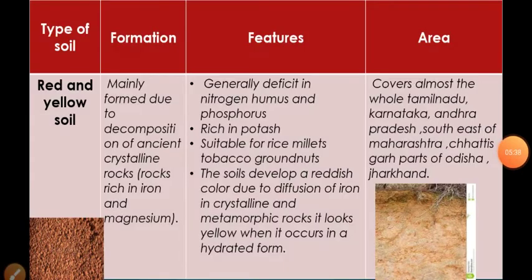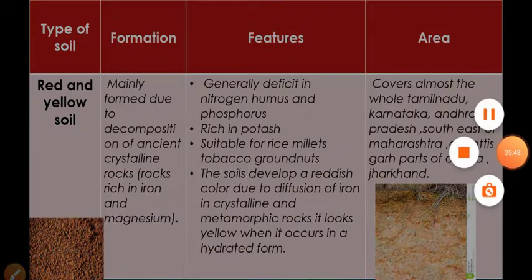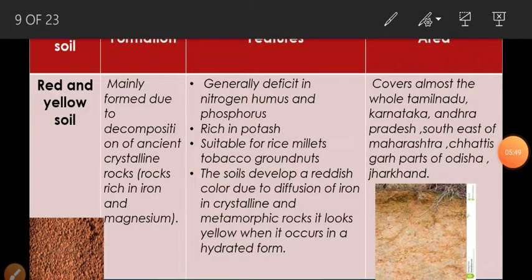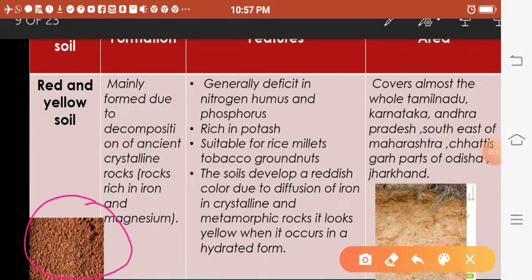Next is red and yellow soil. I have pasted photographs so you can easily identify these soils. The red color is due to the diffusion of iron in crystalline and metamorphic rocks.